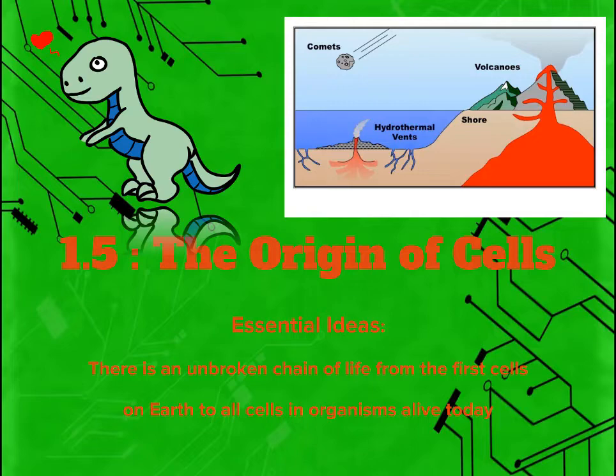Chordates — a classification that includes fish, amphibians, reptiles, birds, and mammals — has only been around for 500 million or so. That's only 11% of the Earth's time. Only 11%? This fact alone has just boggled my mind.